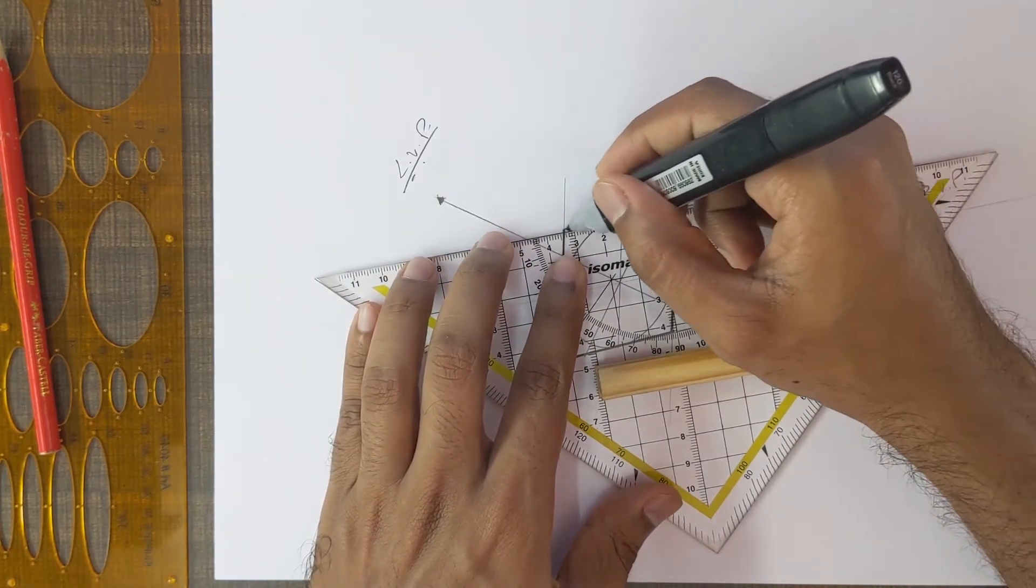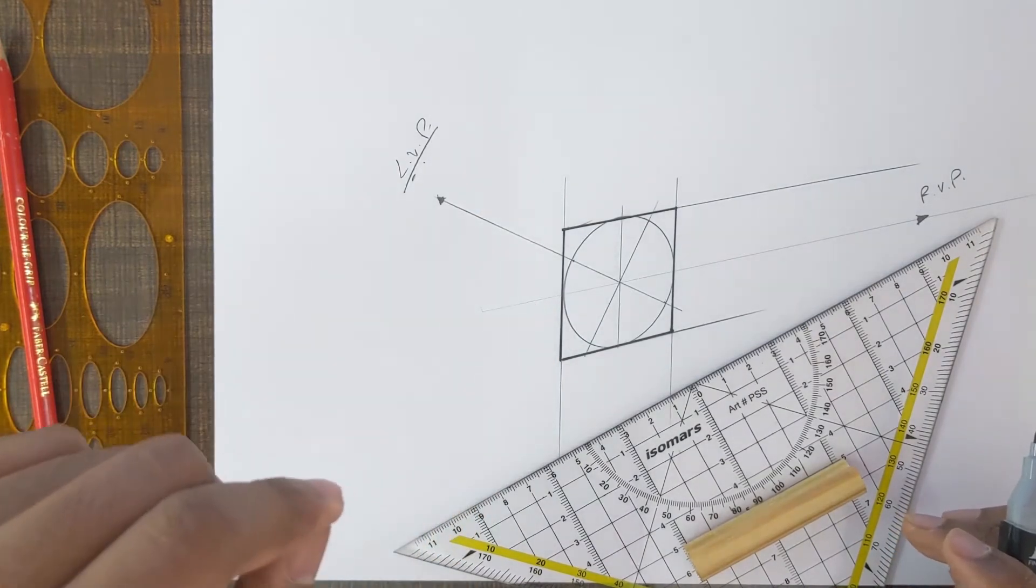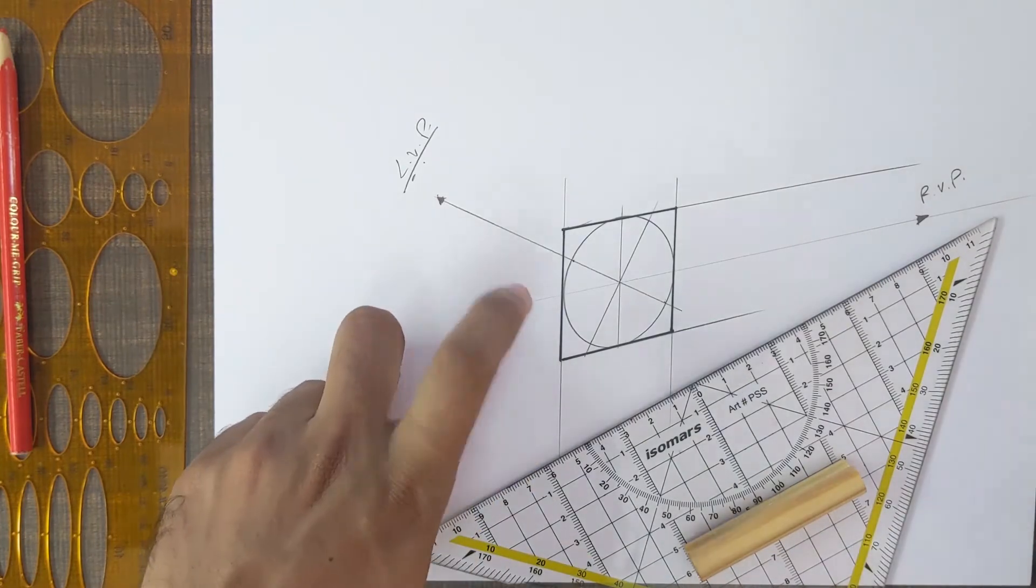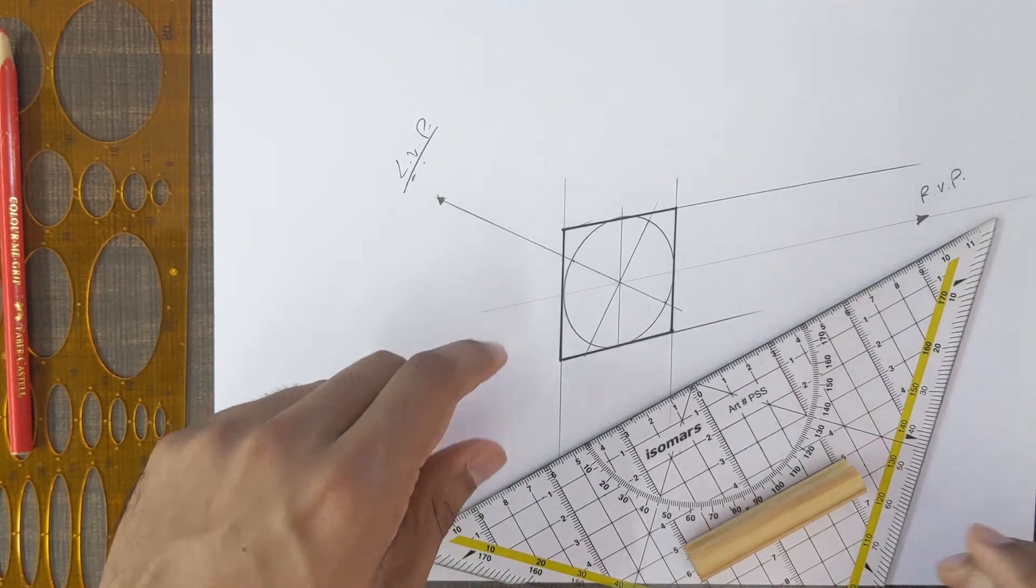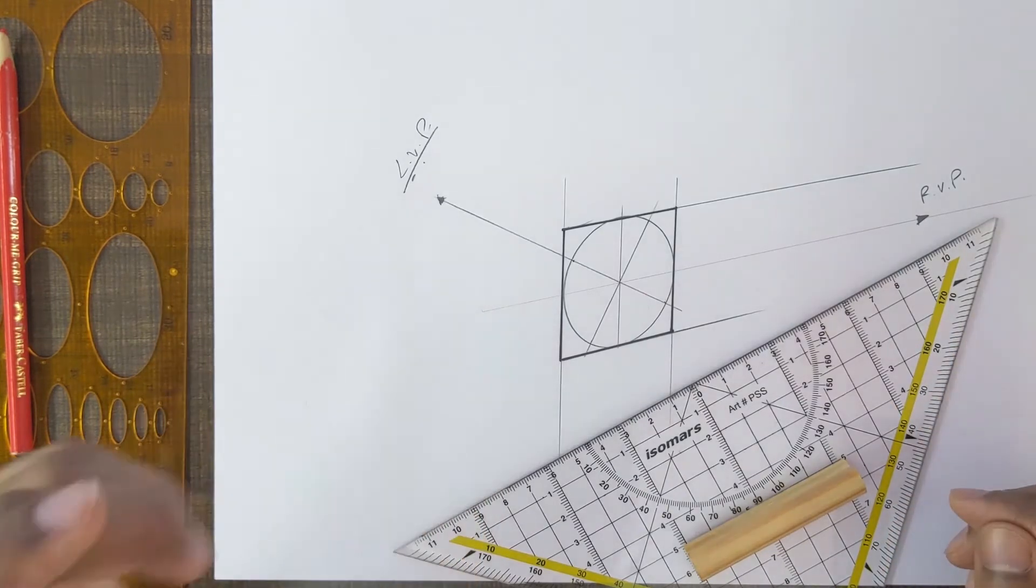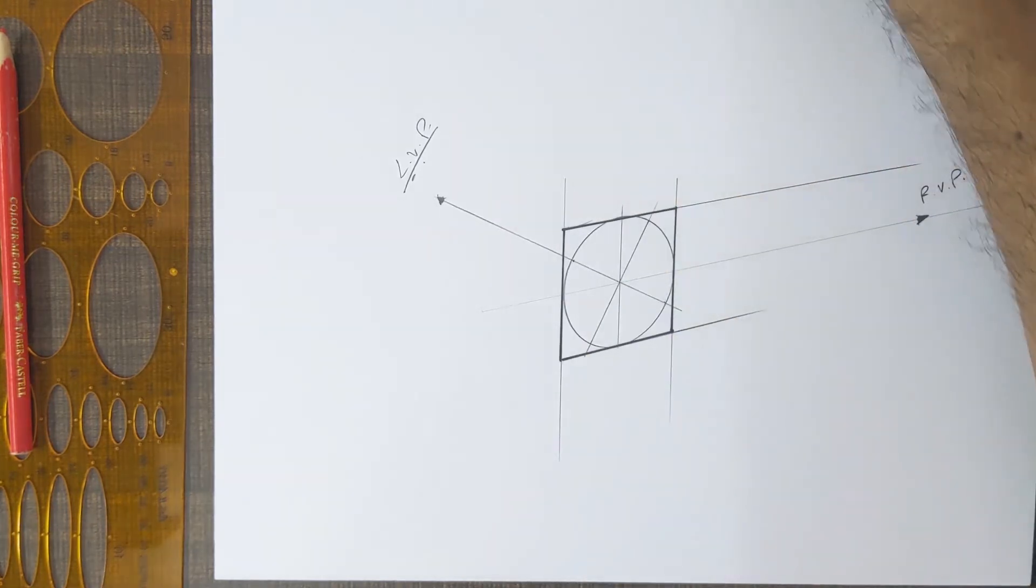Which is very very useful, especially while drawing the wheels of the car, which we will see in our upcoming tutorials. By the way, this technique is not covered in Scott Robertson's How to Draw book. This is something I learned, I don't remember exactly, but by some American professor's article on the internet.